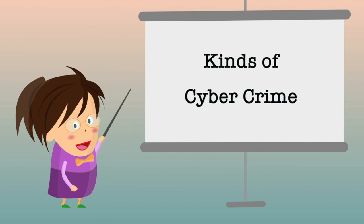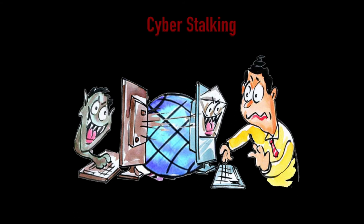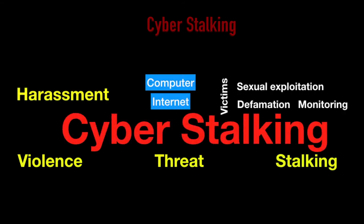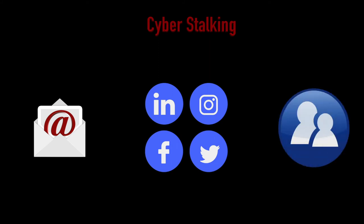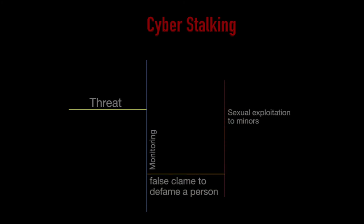Now we will discuss various kinds of cybercrime. The first one is cyberstalking — it is an act of stalking, harassing, or threatening someone using the internet or a computer as a medium. This is often done to defame a person using email, social networks, instant messenger, web posting, etc., as the internet offers anonymity. The behaviour includes false claims to defame a person, threats, sexual exploitation of minors, monitoring, etc. Child pornography — it is an act of possessing an image or video of a minor who is under 18 years old engaged in sexual conduct.